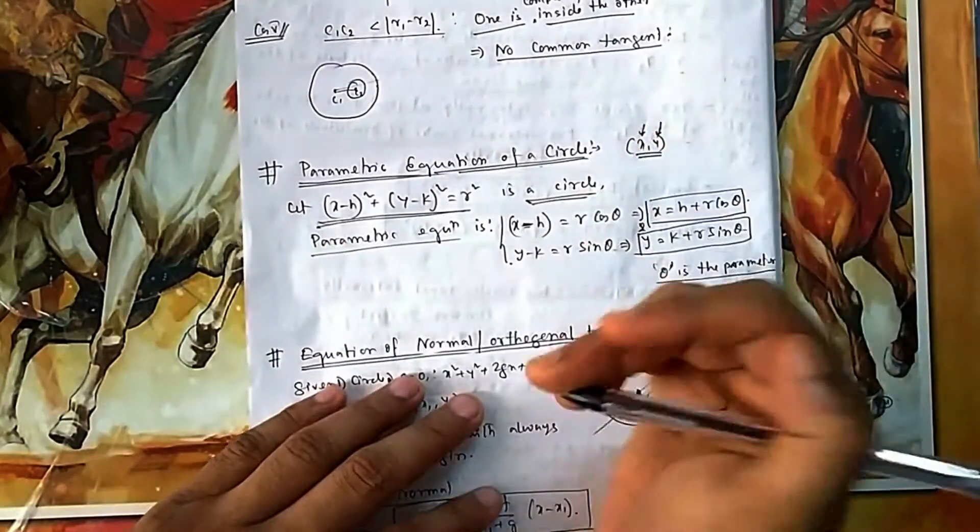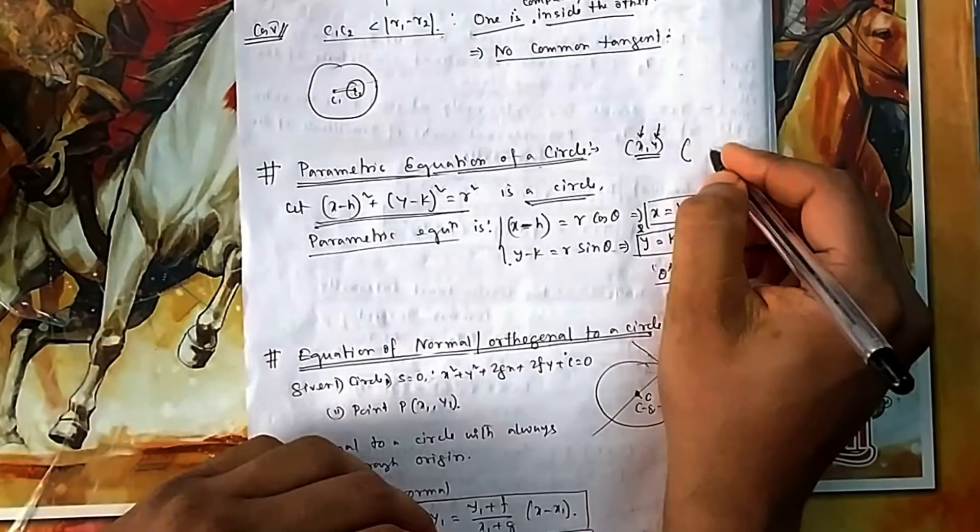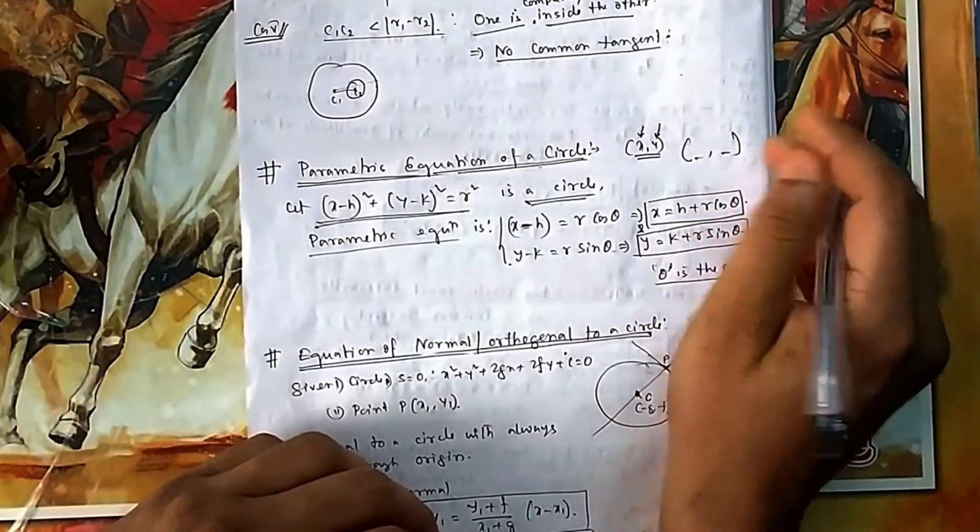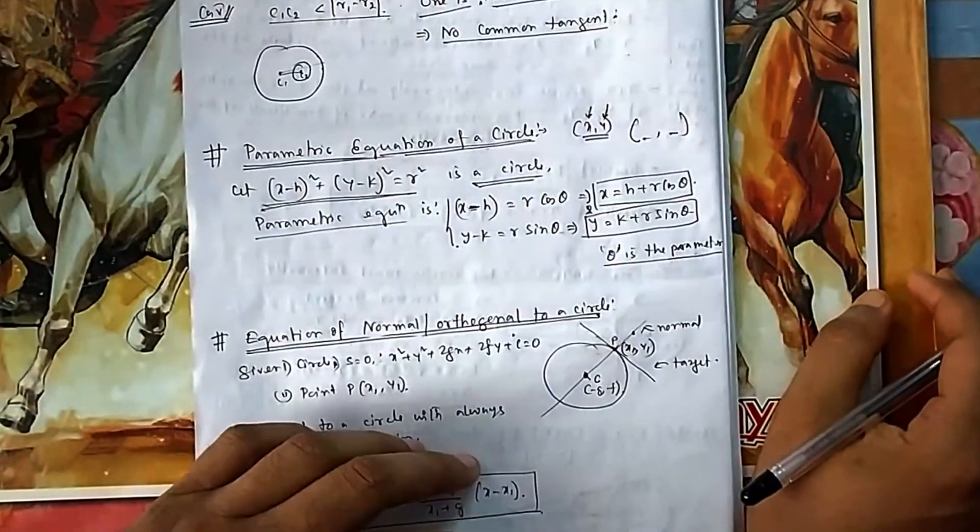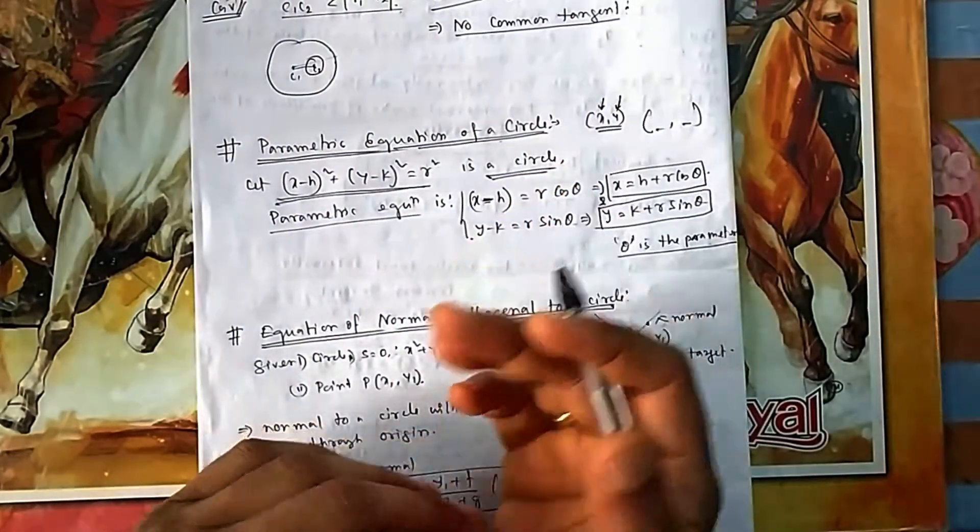In circle it will be helpful. In parabola it will be very helpful. That's why it is known as parameterization. Parameterization means directly we are not relating x and y in a single equation; we will introduce a parameter.